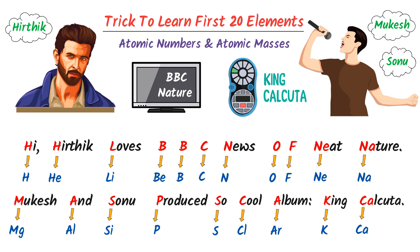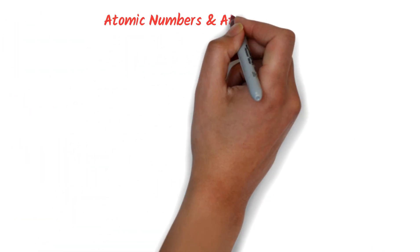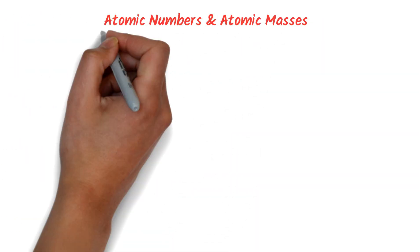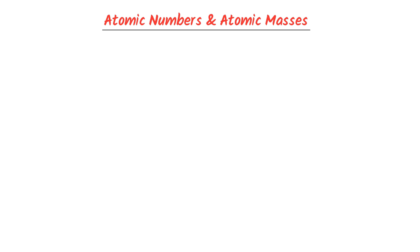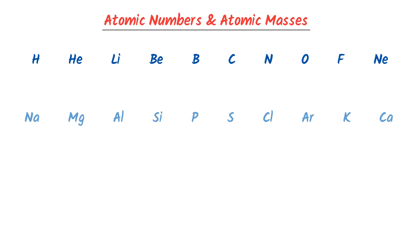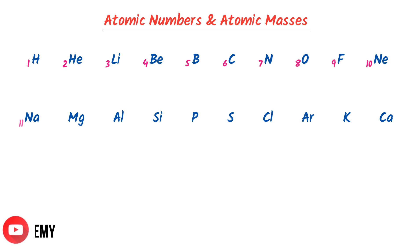Using this trick, I can easily write the first 20 elements of the periodic table. Now, to learn their atomic numbers, just write the first 20 elements using the previous trick, then start numbering from Hydrogen and so on.